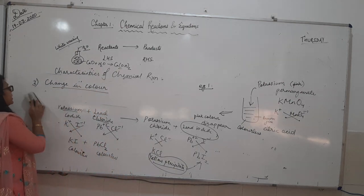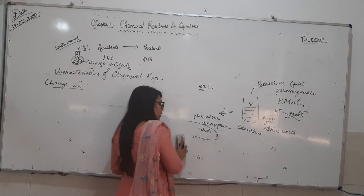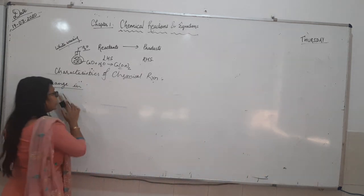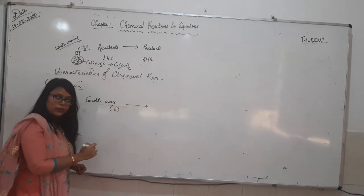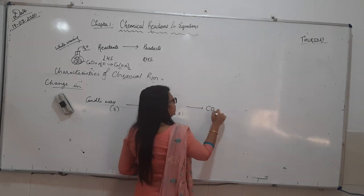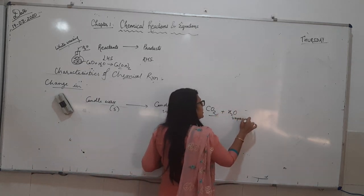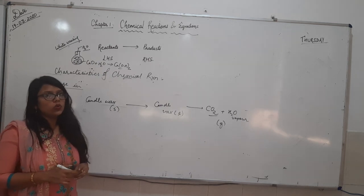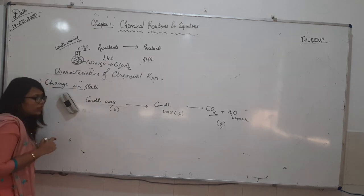Moving to the next characteristic — change in state. This is easy. You have seen a burning candle: a solid candle wax undergoes burning — it changes to liquid candle wax, and then changes to CO2 gas and water vapour. The state changes from solid to liquid to gas, and this shows that a chemical reaction has taken place.